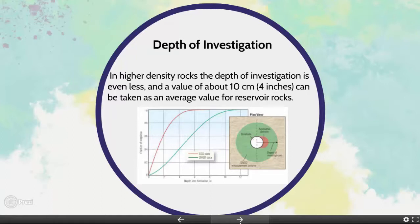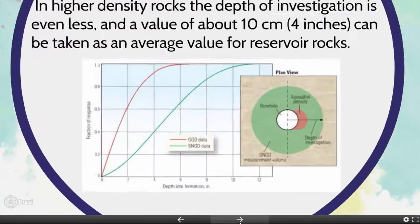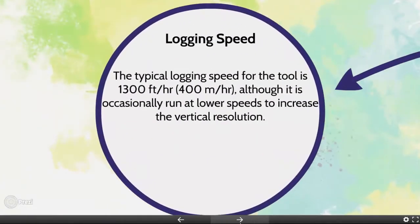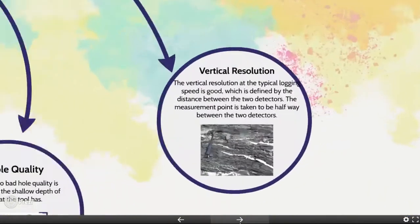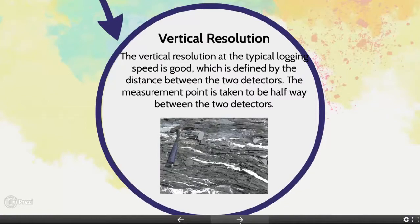The shallow depth of investigation also implies that in porous and permeable formations — where its main use lies — it only measures the invaded zone. The typical logging speed is 1,300 feet per hour, though it is occasionally run at lower speeds to increase vertical resolution. The log quality is not as affected by logging speed as natural gamma ray logs because much higher count rates are obtained with the radioactive source. The vertical resolution at typical logging speed is good, defined by the distance between the two detectors.